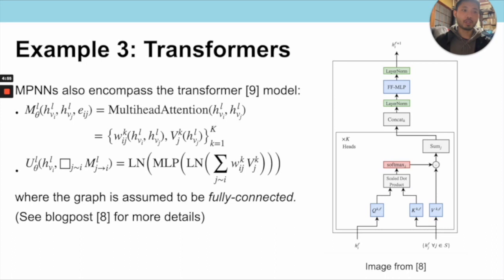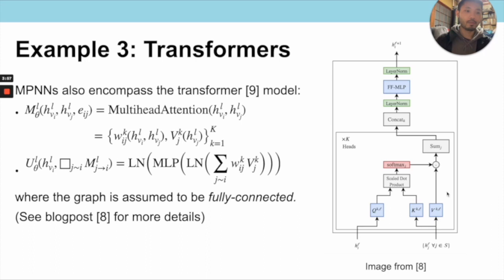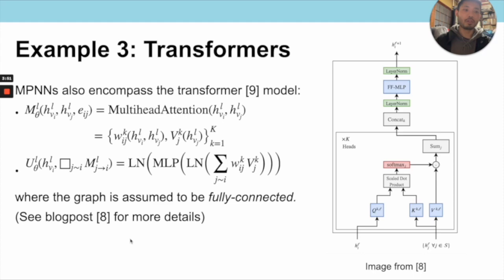Even the transformer model can be expressed as a message-passing neural network, where the message function corresponds to multi-head attention yielding attention weights and value vectors, and the update function is a multi-layer perceptron sandwiched by layer normalizations. The aggregation is the sum of value vectors weighted by attention weights, and the underlying graph is fully connected. The transformer diagram clearly shows the split between message-update steps in the inner box and state-update steps in the outer box.